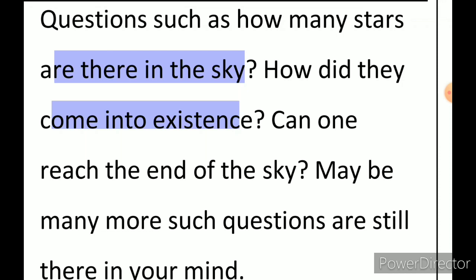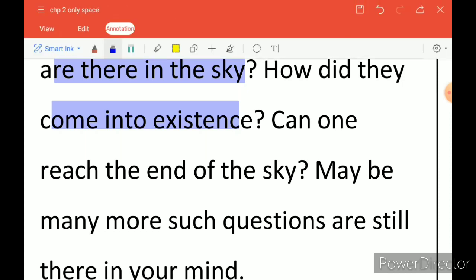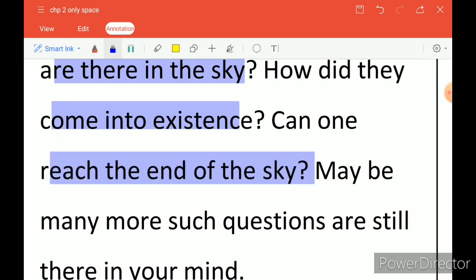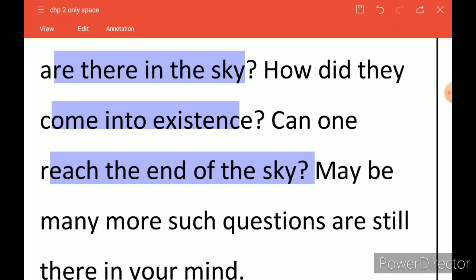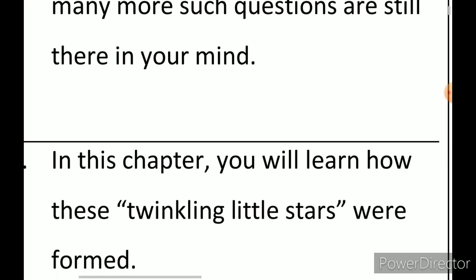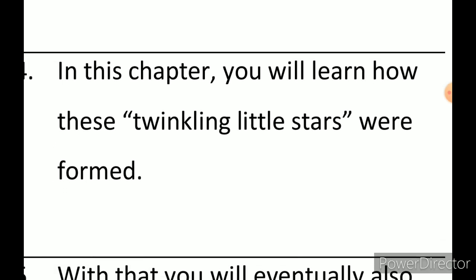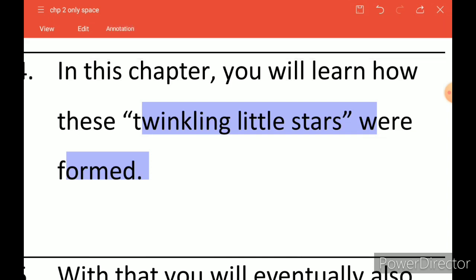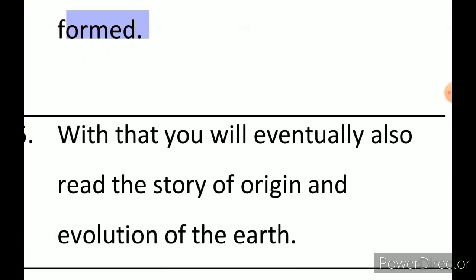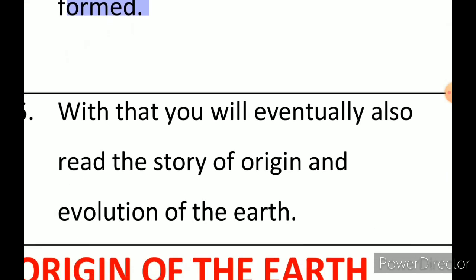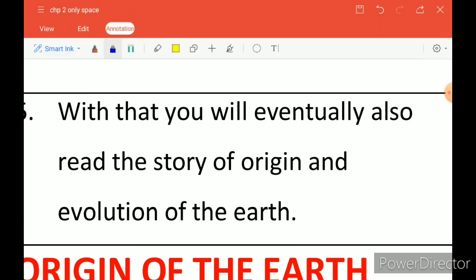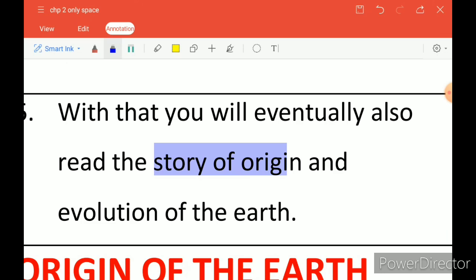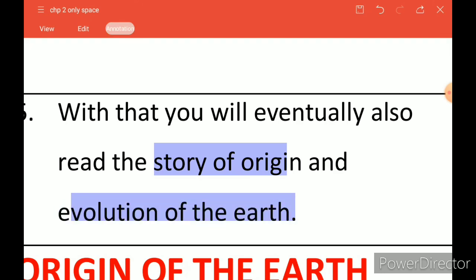Questions like what will be the end of the sky — our curiosity raised so many questions. In this chapter, we try to cover all your childish thoughts: how these twinkling stars were formed, and the story of how Earth originated — the second question raised in your book. We will read about the origin and evolution of the Earth.